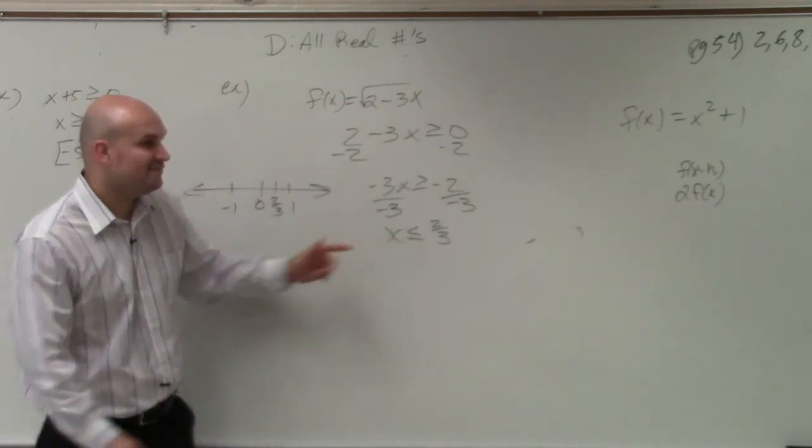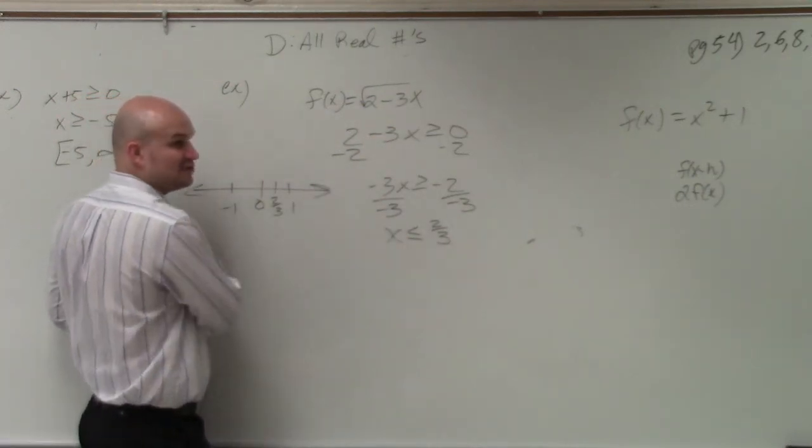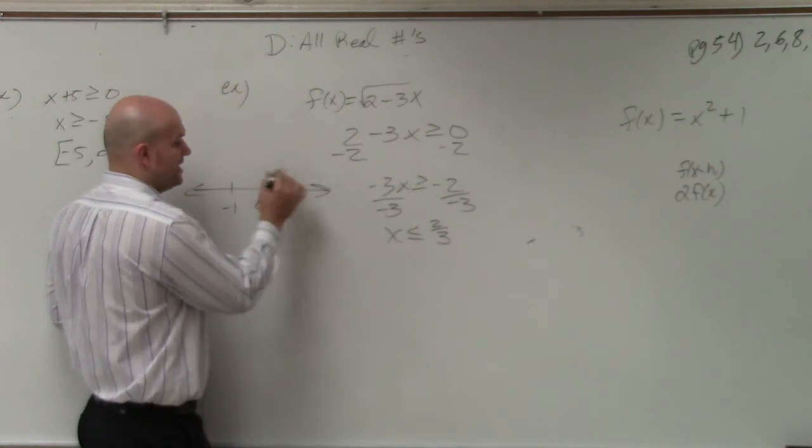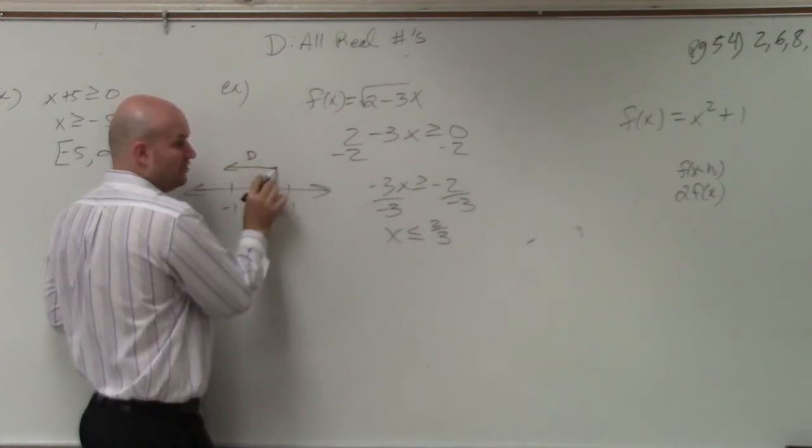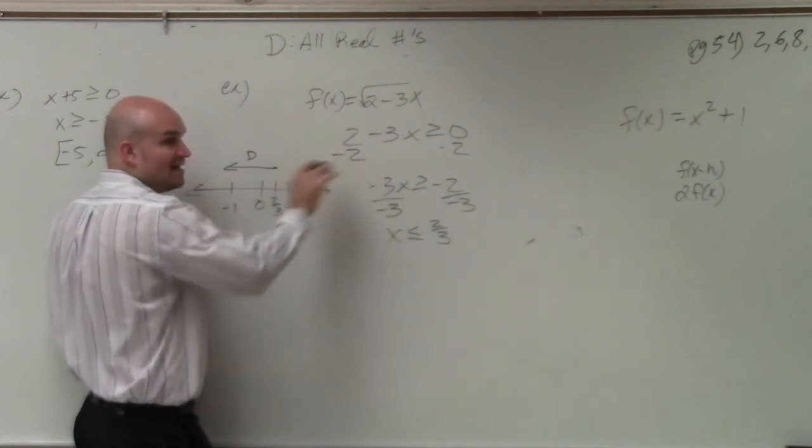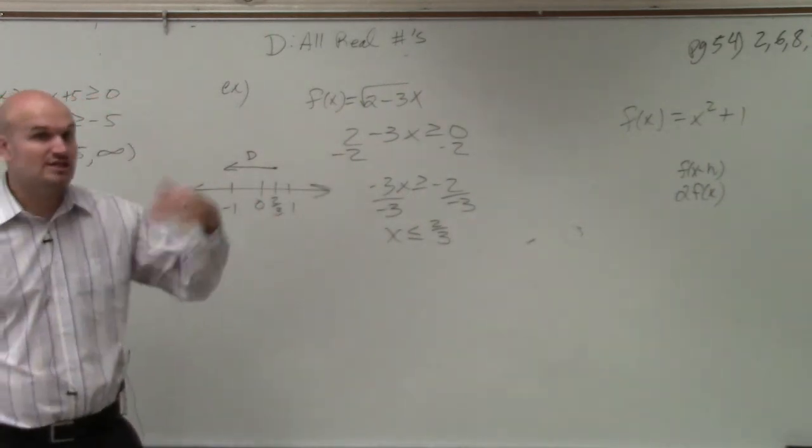Now, it's saying, so therefore, all values that are less than 2 thirds should be a part of our domain. But it's saying all numbers that are greater than 2 thirds should not be in our domain.